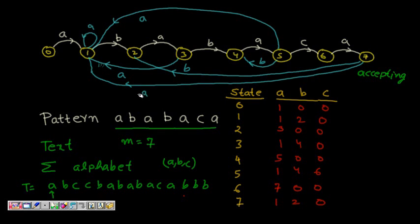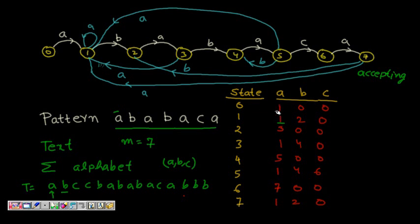We first do some string pre-processing to construct this table. Assuming we have the table, we start matching. Getting an 'a' moves us from state 0 to state 1, because at least the first prefix is matching. If instead the first letter were 'b', no prefix would be matching and we'd stay at state 0. Similarly, 'c' also keeps us at state 0. From state 1, getting a 'b' moves us to state 2, meaning we have matched prefix 'a b' of length 2.